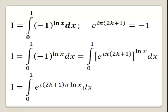Recall that e to the power i pi equals minus 1, or e to the power of odd multiples of i pi equals minus 1. So we can write e to the power i pi times (2k+1) equals minus 1, where k is an integer.